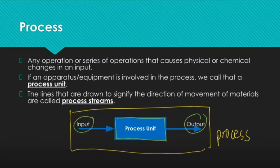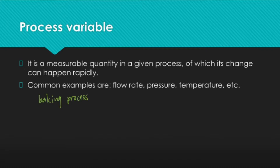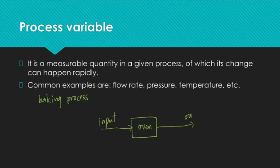You should be able to apply that to our future lessons. Let's proceed to the definition of process variables. We define process variables as a measurable quantity in a given process of which its change can happen rapidly. So process variables are the things that we monitor in a process. The changes to the process variables are indications that something is happening in the process. Common examples of this are flow rates, pressure, temperature, and other parameters. If we go back to our previous example of the baking process, let us draw our diagram. So we have an oven, which is our process unit, and we have our inputs and outputs, which are our process streams.